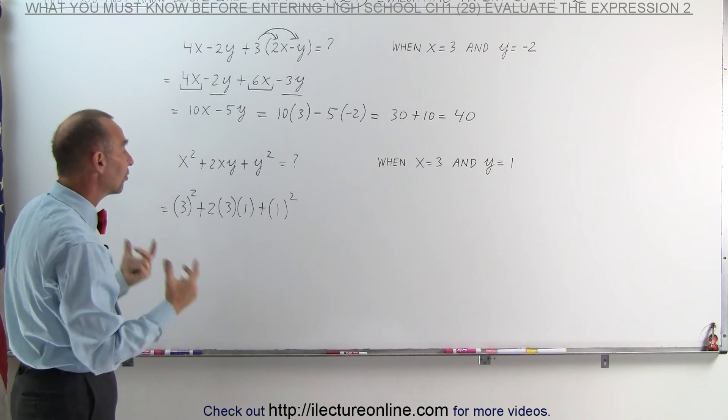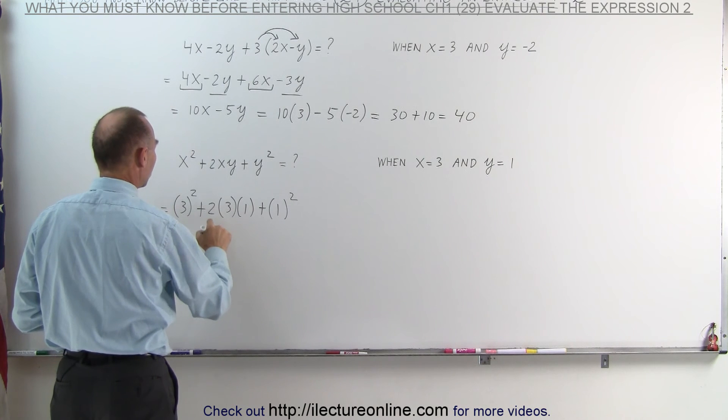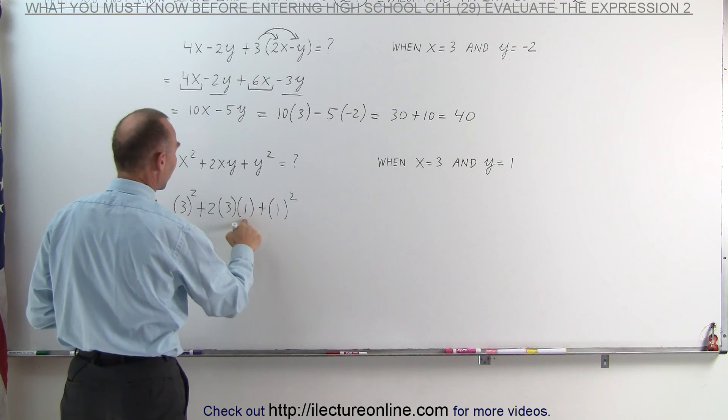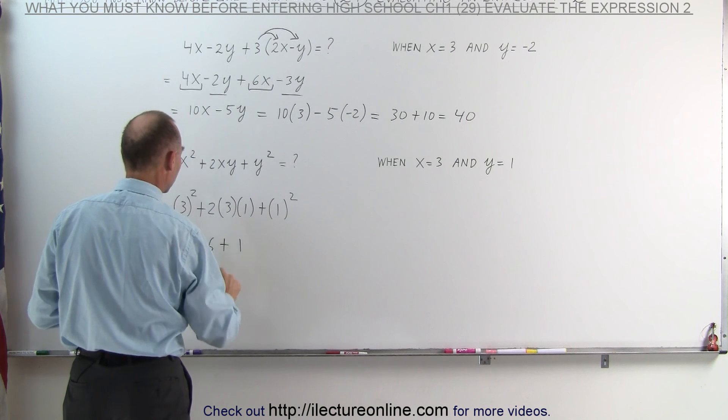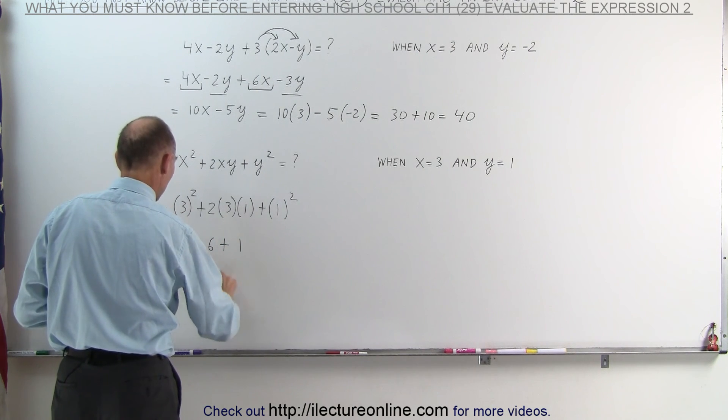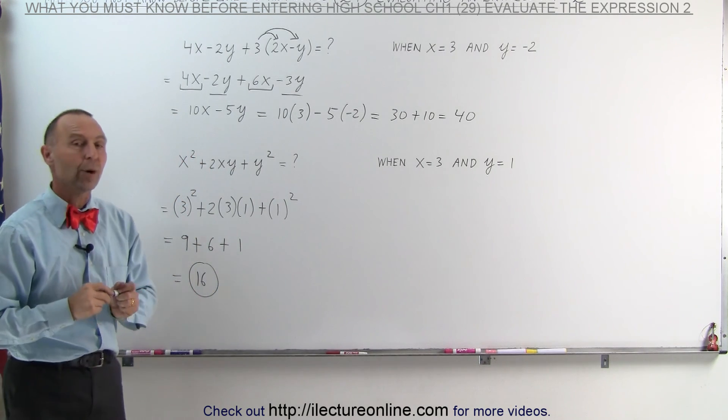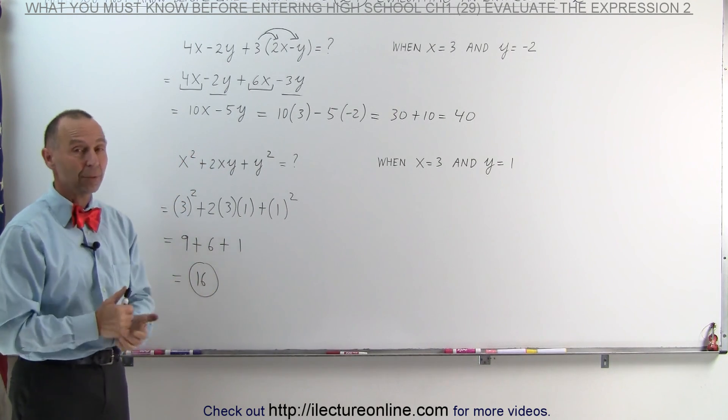Now we're going to simplify this. 3 squared is 9, plus 2 times 3 is 6 times 1 is 6, plus 1 squared is 1. Adding it all together, that would be 16, and that would be the expression evaluated when x equals 3 and y equals 1. And that's how we do that.